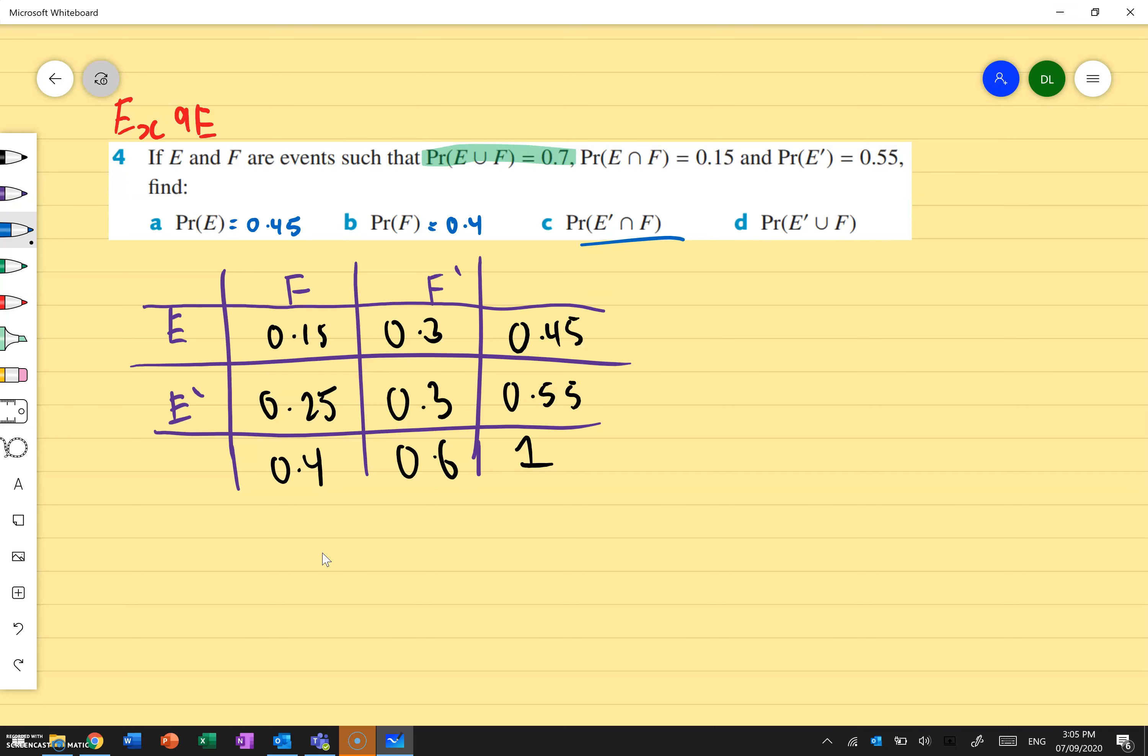With this one over here, we've got the probability of E dash intersecting with F. So what I'm going to do is I'm actually going to highlight E dash and then highlight F. So E dash will be in light green. So that's this row over here. And what I'm going to do is I'm going to ignore the total. The reason I'm ignoring the total is because that's not a value that's inside one of the parts of our Venn diagrams. And then I'm going to use a pink to look at F. So F is this column right here.